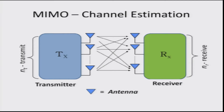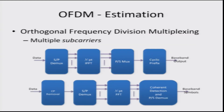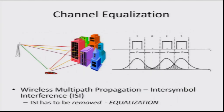In a MIMO wireless communication system with multiple transmit and receive antennas, this matrix channel has to be estimated. In a MIMO OFDM system, transmission is over multiple sub-carriers, and a schematic is shown here — the channel coefficients over these sub-carriers must be estimated. In channel equalization, high data rate systems experience inter-symbol interference due to low symbol time, and this interference must be removed to reduce distortion and improve communication efficiency.